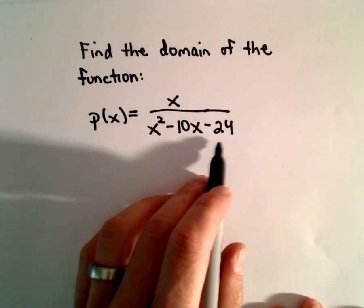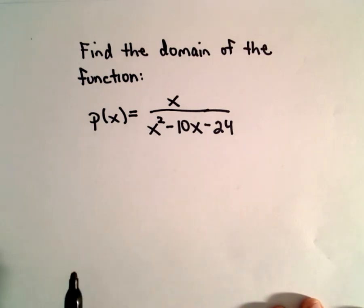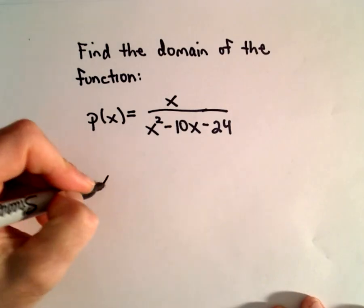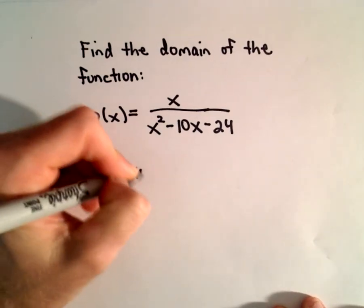So the only restrictions, the only values of x that we'll have to omit will be those values of x that make the denominator equal to 0. So I'm going to find those values.